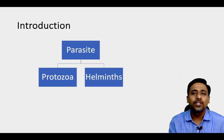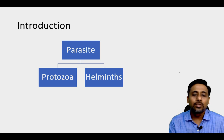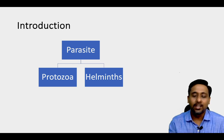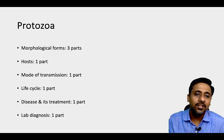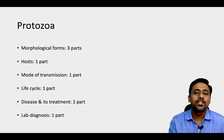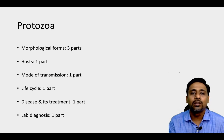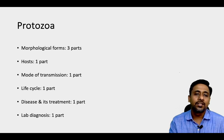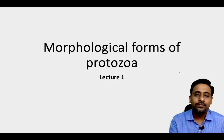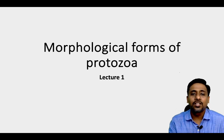As you know, parasites are broadly categorized into protozoa and helminths. I will start this lecture series with protozoa, which will be followed by helminths. In protozoa, there will be a total of 8 lectures in which 3 lectures will be on morphological forms, one on the host, followed by mode of transmission, life cycle, disease and treatment and lab diagnosis. This is the first lecture on the morphological forms of protozoan parasites.